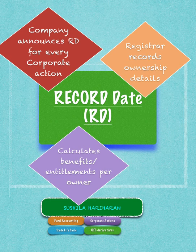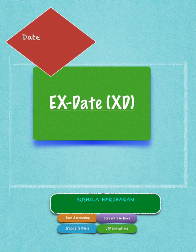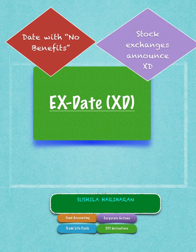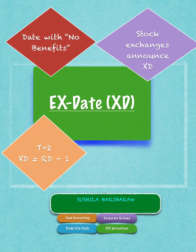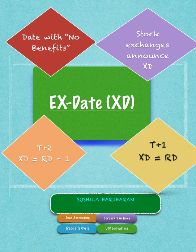The ex-date is announced by the stock exchange — it is the date on which the stock will trade without any entitlements. In a market that operates on a T+2 rolling settlement basis, the XD is equal to record date minus one. In a market like India, which operates on T+1, the XD is equal to the record date.